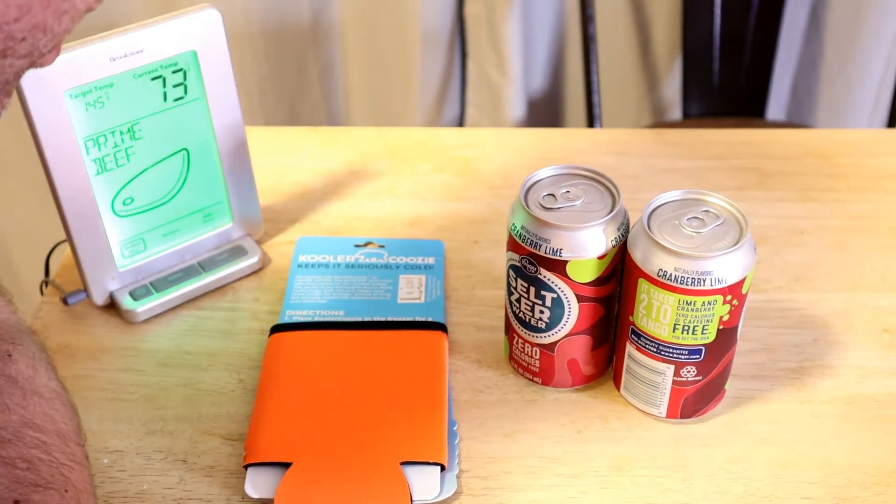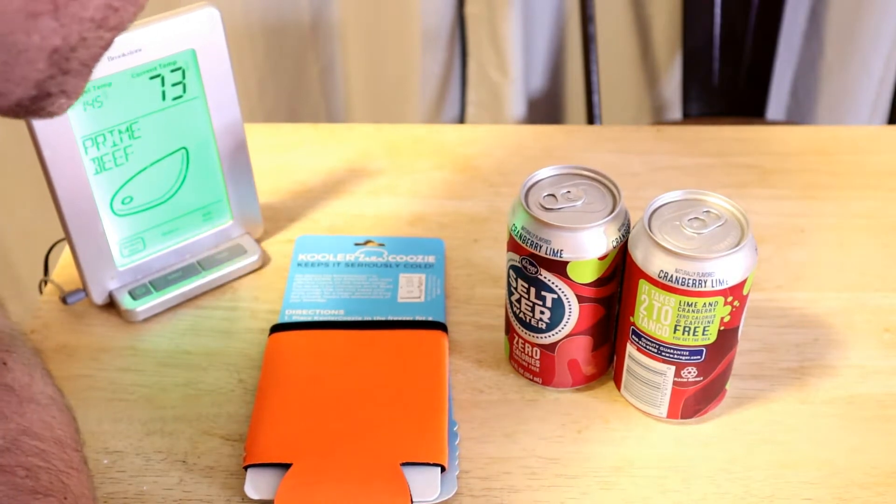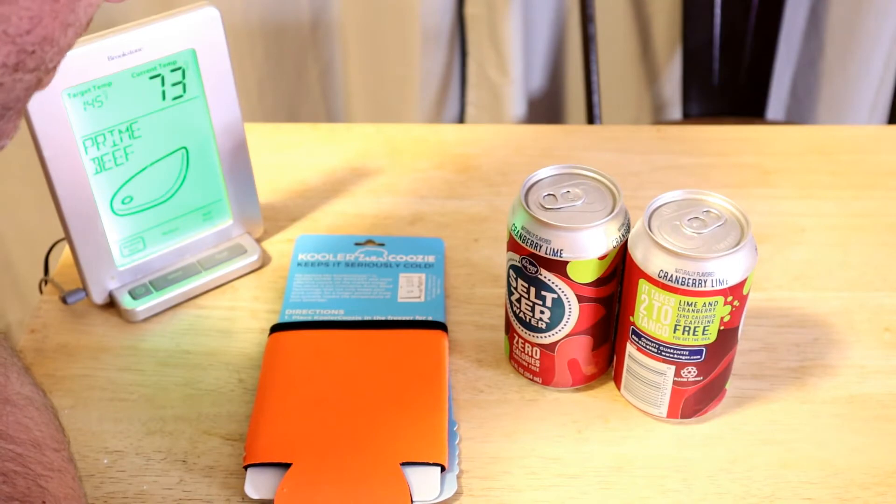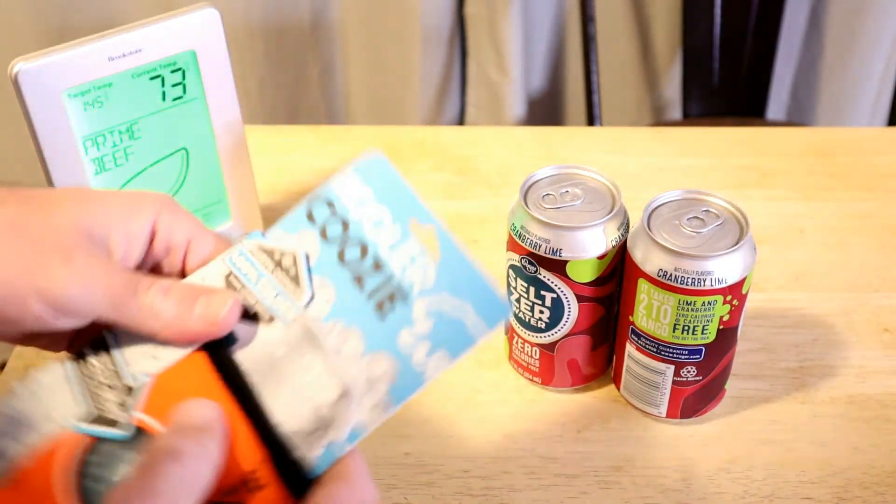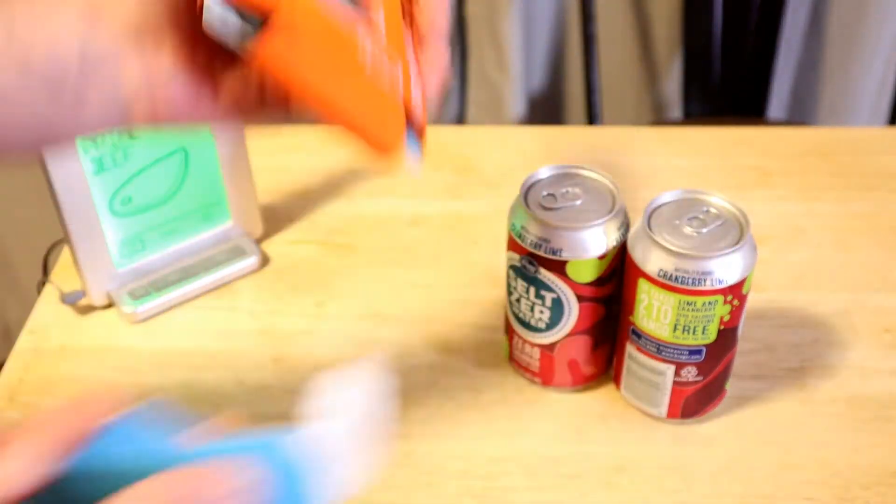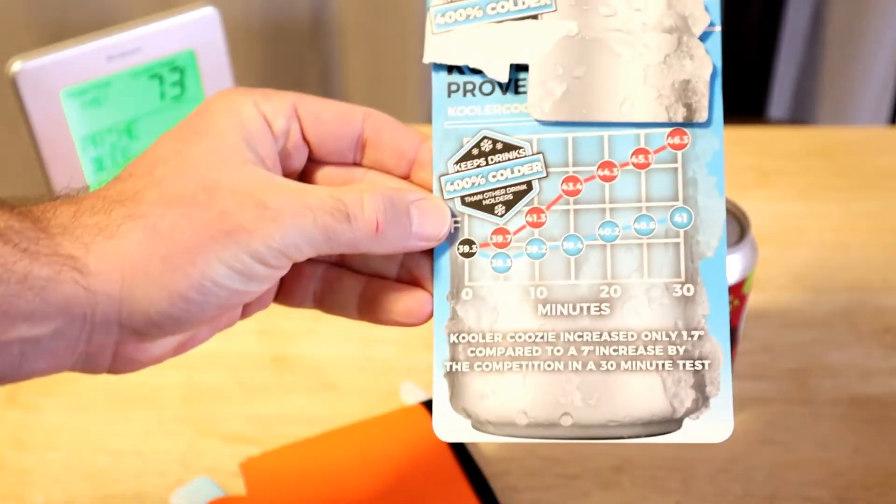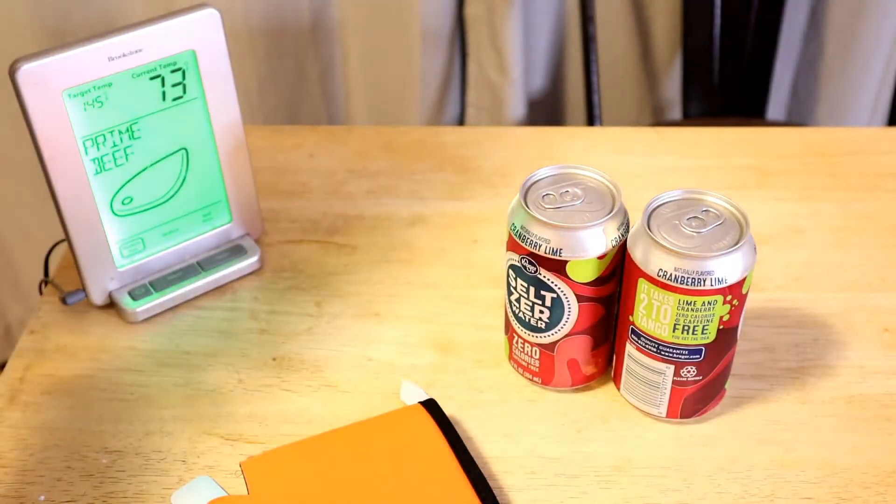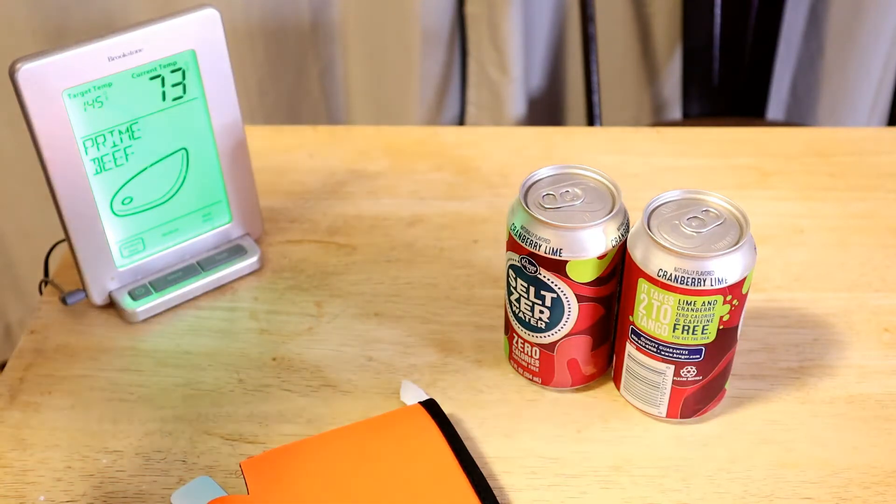The Cooler Cozy keeps it seriously cold. It says we believe the Cooler Cozy is hands down the coolest and most effective koozie on the market today. The secret is our innovative arctic bead technology that not only keeps your drink cooler for a longer period of time, but actually lowers the temperature of your beverage. The retail price is $8.99, but shop around because online everything seems more expensive than the actual stores.